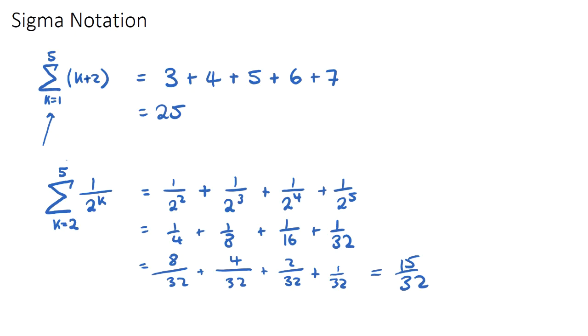So in IB questions, they do sometimes try and link sigma notation to arithmetic and geometric series questions. Because think about an arithmetic and geometric series. It's when we're summing up an amount of terms. And they might say, I want you to find the sum of the first 5 terms. And instead of asking that, they might actually write it in this format.